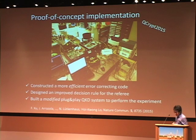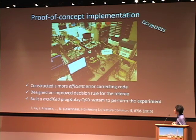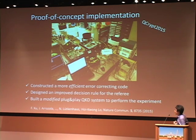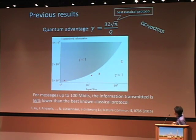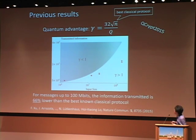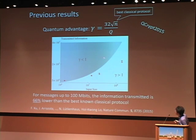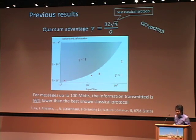Most of you may have heard our talk at QCrypt 2015 in Tokyo. When I was at Toronto, we collaborated with Norbert and Hoi-Kwong Lo. We performed a proof-of-concept implementation. Our major contributions included a much better error correction code, a better decision theory for the referee, and we built a system based on a modified plug-and-play to demonstrate the coherent state quantum fingerprinting protocol. The major result was demonstrating that quantum fingerprinting can beat the best known classical protocol — for messages up to 100 megabits, the transmitted information was about 66% lower than the best known classical protocol.